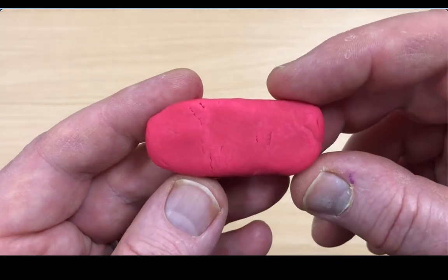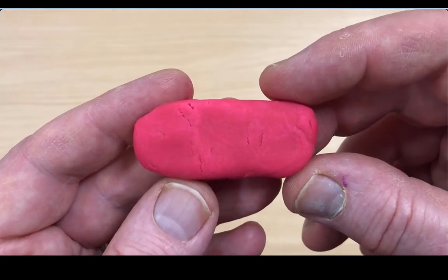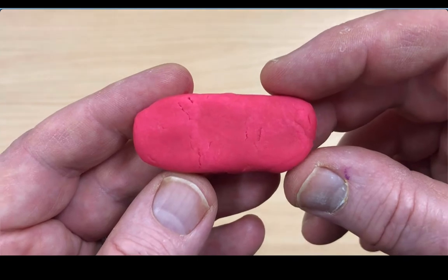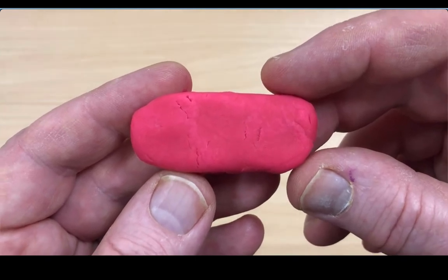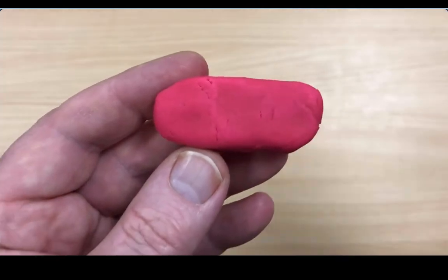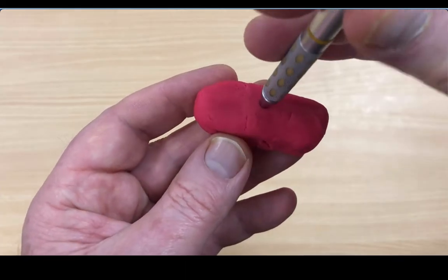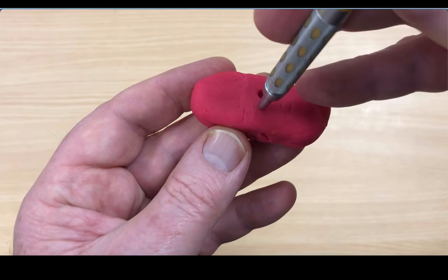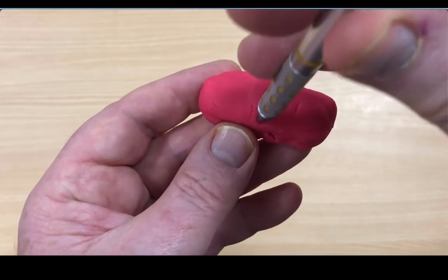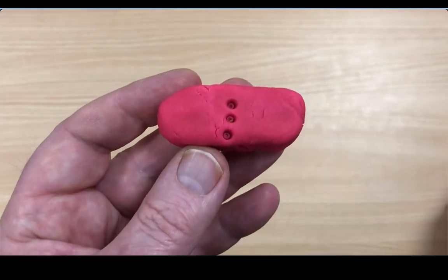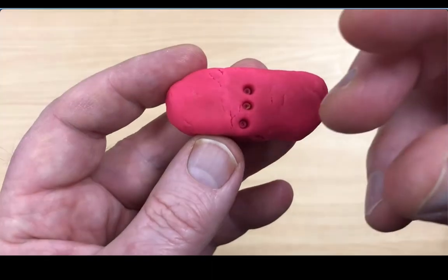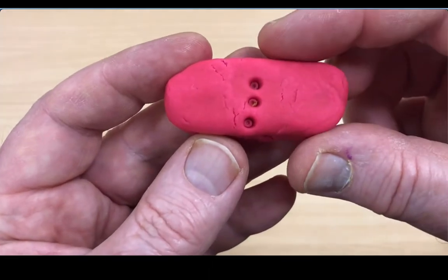So within a bed, we might see structures, for example, like fossils, where we know their shape. In this Play-Doh example, we can make some holes. Circular in shape, we know the shape that these start as.